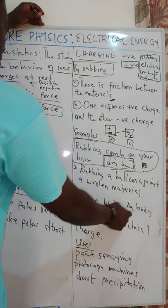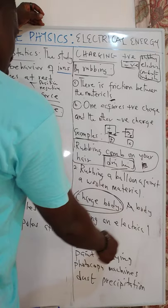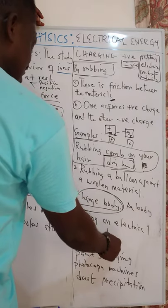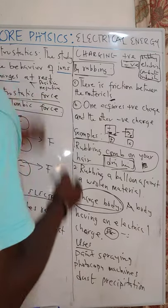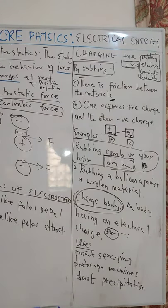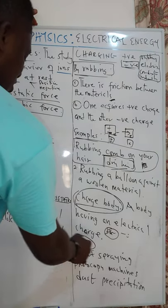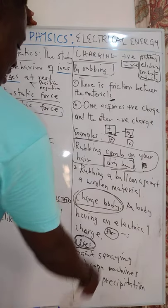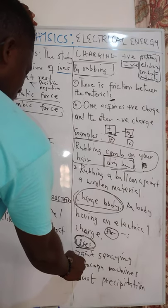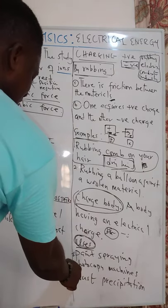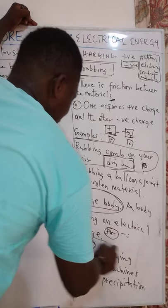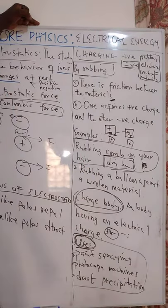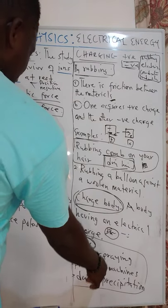A charged body is a body that has an electrical charge, either positive or negative. Once a body has a charge — either positive or negative — then we call that body a charged body. The uses of electrostatic charges include: first, it helps us in paint spraying; second, it helps us in photocopy machines; and third, it helps us in dust precipitation. These are the few uses of electrostatics or charged bodies that we can talk about.